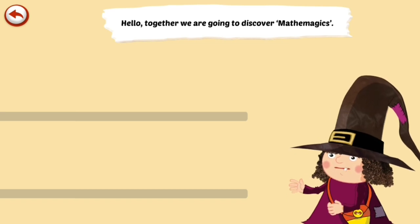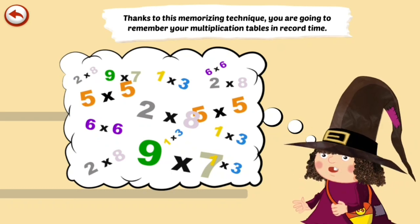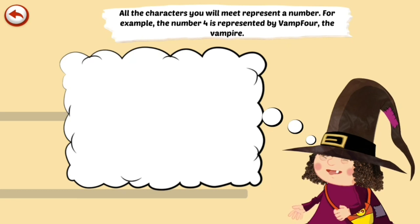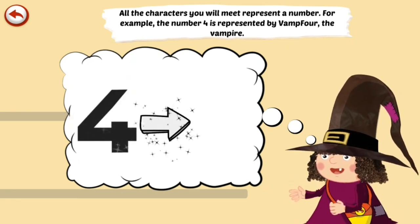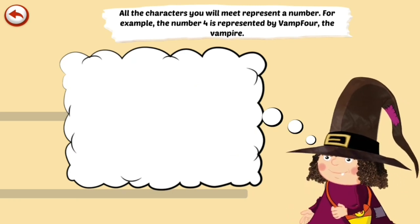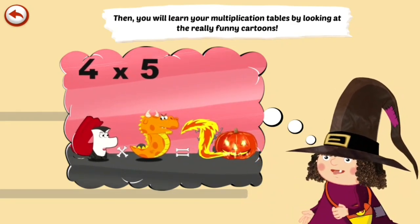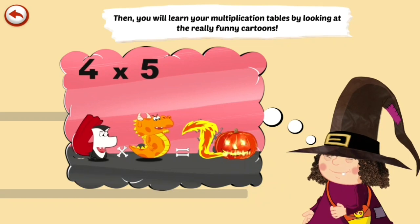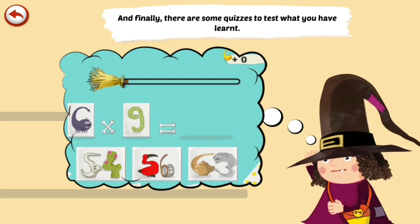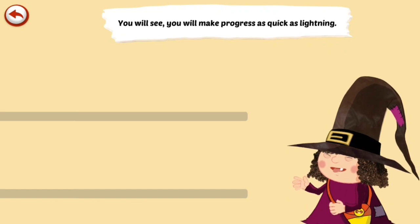Hello, together we are going to discover Math the Magics. Thanks to a memorizing technique, you are going to remember your multiplication tables in record time. All the characters you will meet represent a number. For example, number 4 is represented by Vamp 4 the Vampire. You will learn your multiplication tables by looking at really funny cartoons. And finally, there are some quizzes to test what you have learnt. You will see, you will make progress as quick as lightning.